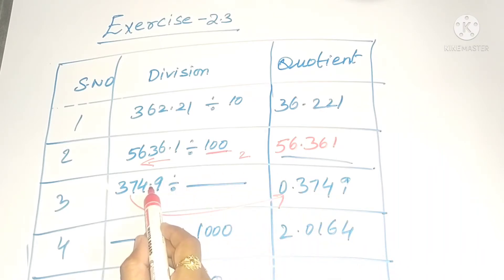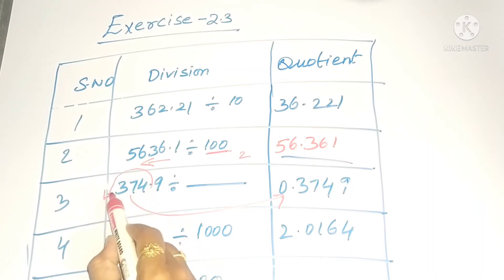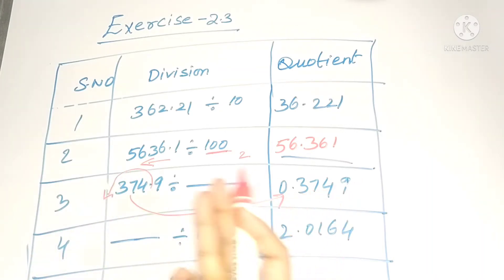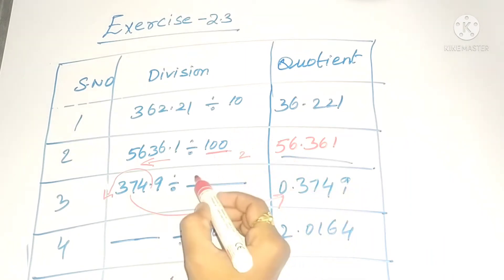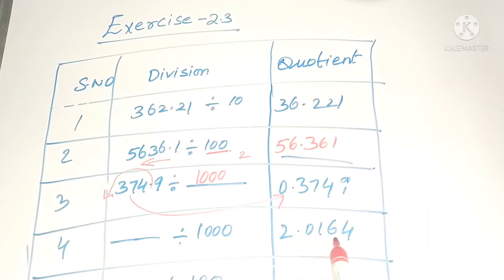Here 374.9 is given and it became 0.3749, which means the decimal point moved three place values to the left side. Three place values means we have to divide with 1000. In the fourth one, a number is there and it became 2.0164.